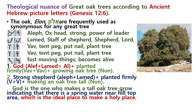And then Vav means tent peg. If it is a verb, it means to put a tent peg underground. If it is applied to a tree, it means to plant a tree. The consonant Vav is repeated twice — Vav, Vav means plant tree firmly, firmly. And the final consonant is Nun, meaning fast-moving. If applied to plants: fast growing, or a tall tree.